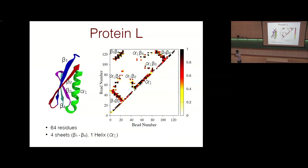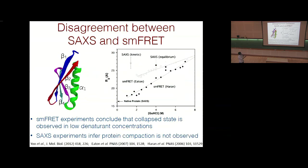Long-range contacts appear as off-diagonal elements; for example, loop closure in the folded form produces such contacts. These are called native contacts and play an important role in modeling the protein. The data from SAXS and smFRET show the radius of gyration as a function of guanidinium hydrochloride concentration. At high denaturant concentrations, Rg is high, indicating the protein is in the unfolded state.